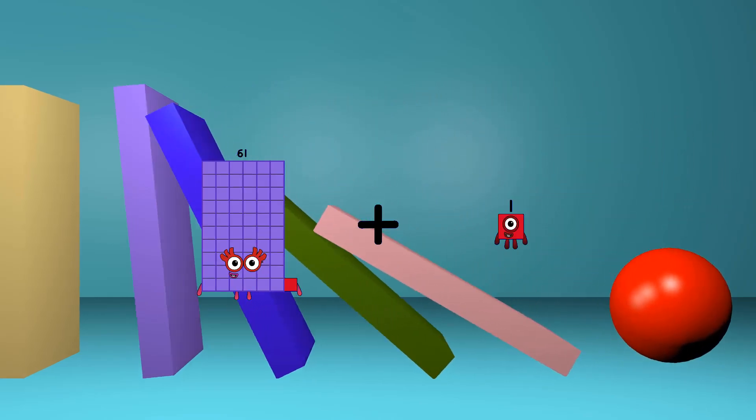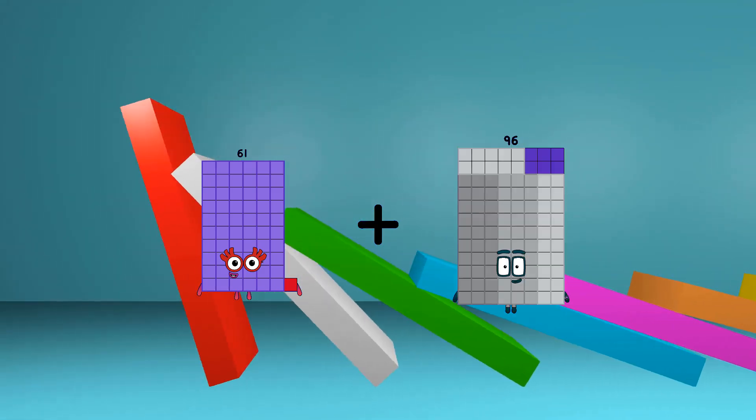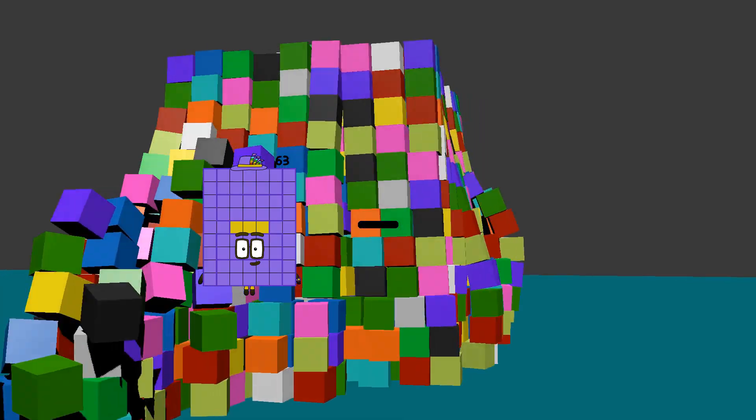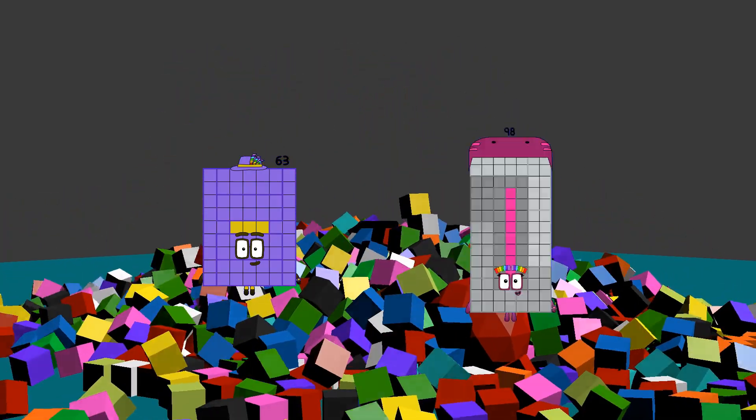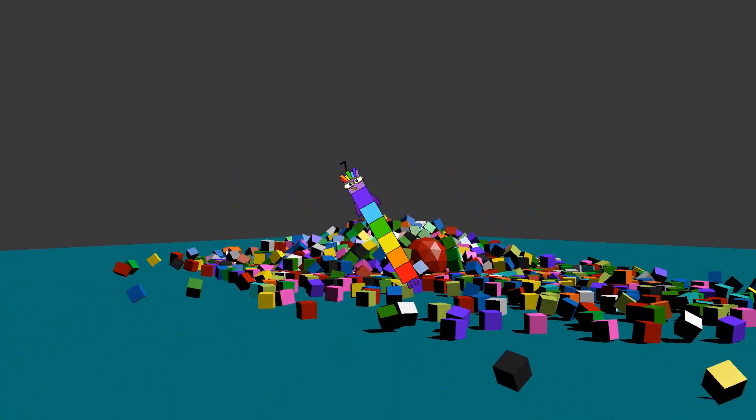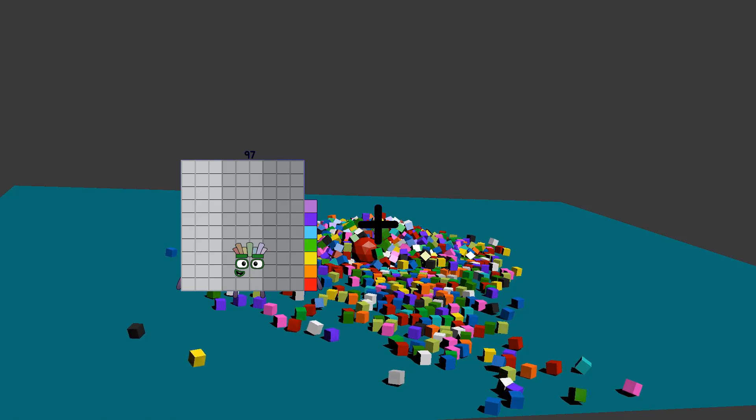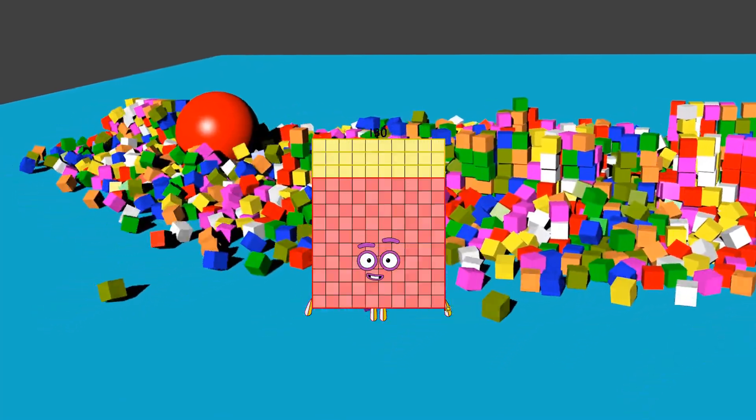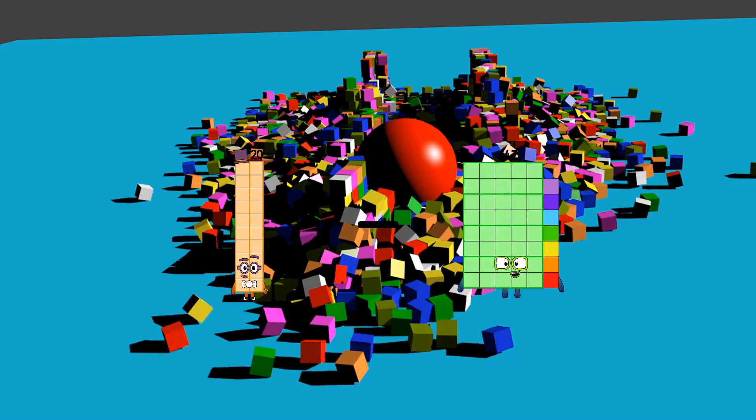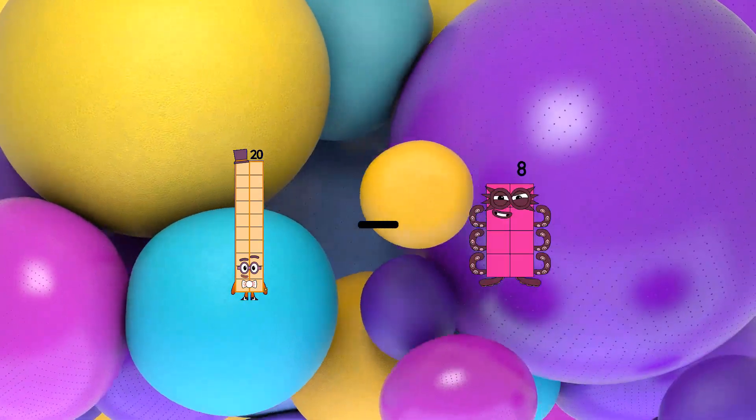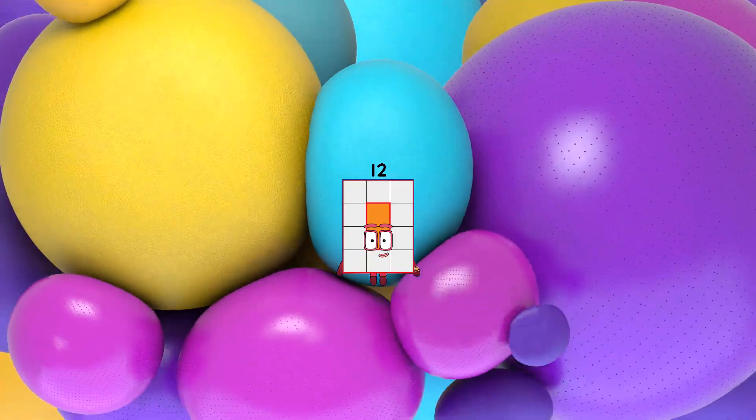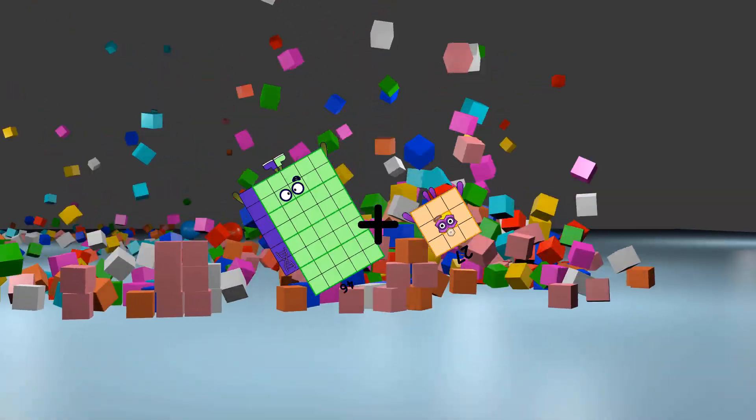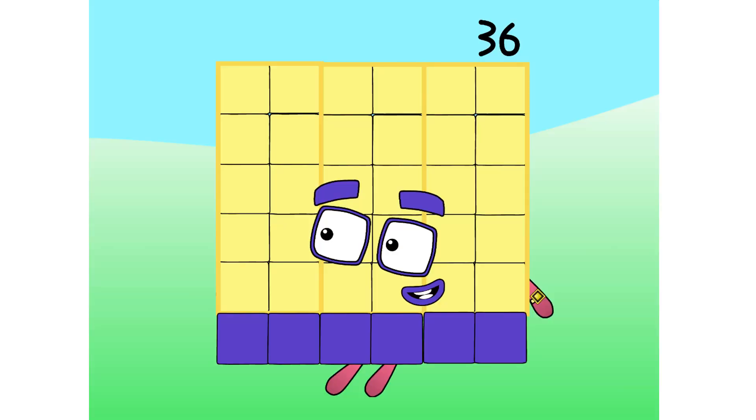61 plus 96 equals 157. 63 minus 56 equals 7. 97 plus 33 equals 130. 20 minus 8 equals 12. 46 plus 27 equals 73.